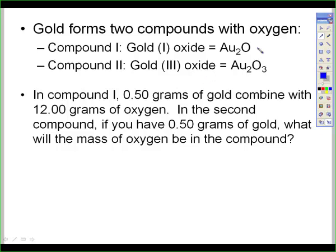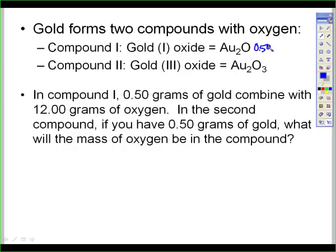In compound 1, 0.5 grams of gold combined with 12 grams of oxygen. In the second compound, if you have 0.5 grams of gold, what is the mass of oxygen going to be? This one's a little bit flip-flopped from the last time.